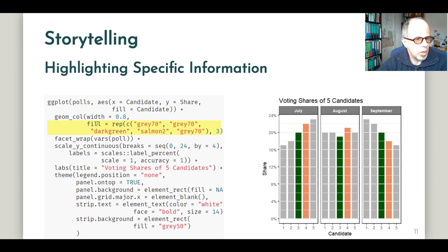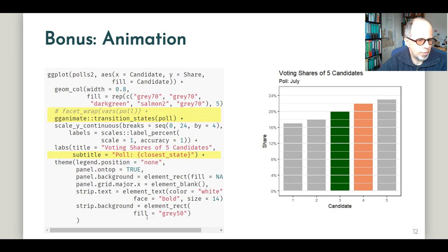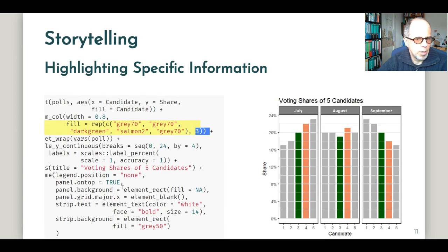So here we're using the fill parameter inside the geom_col function. And we have to repeat it three times for the three facets that we're showing. So now I think we have prepared the plots in such a way that we can tell a story about it. That's basically what I wanted to show you about the static plots.